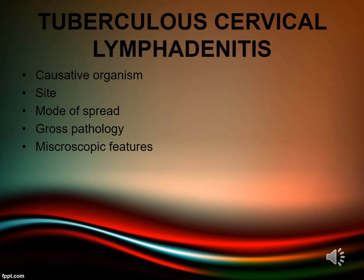Matting is due to peri-adenitis involving the subcapsular sinus space of lymph nodes. In children, infection to neck lymph nodes can come from tonsils, adenoids, or both. Gross pathology: the lymph node is usually firm, matted, and on cut section shows yellowish caseating material. On microscopic features, epithelioid cells with caseating material are seen along with Langhans-type giant cells.